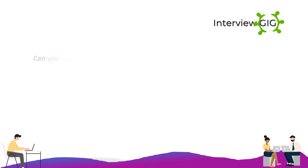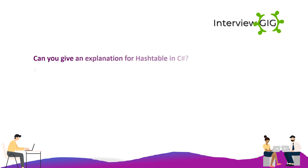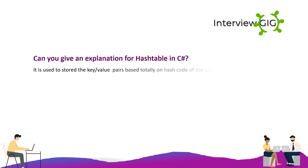What is a Hashtable in C#? A Hashtable is used to store key-value pairs based on the hash code of the key. The key is used to access the element in the collection.